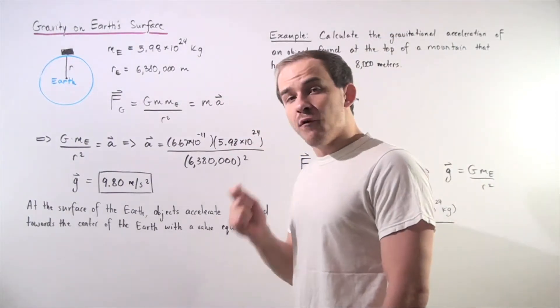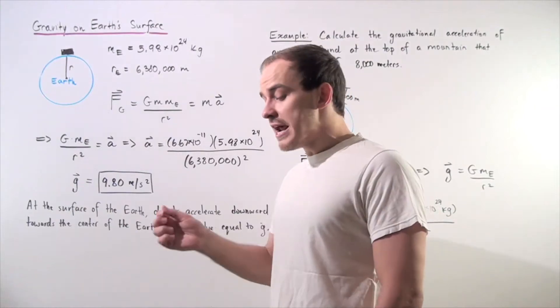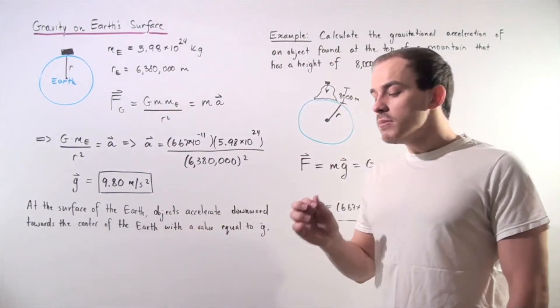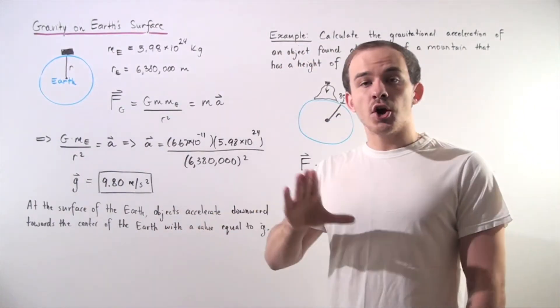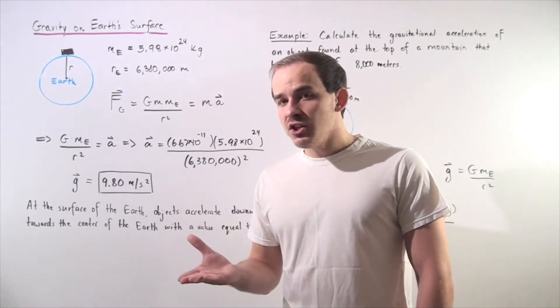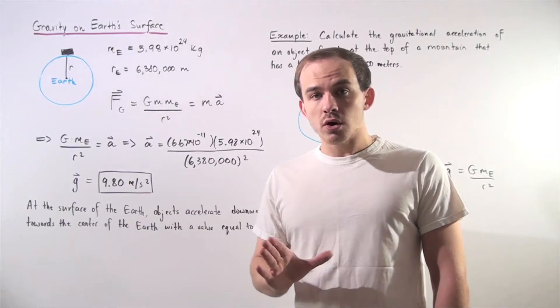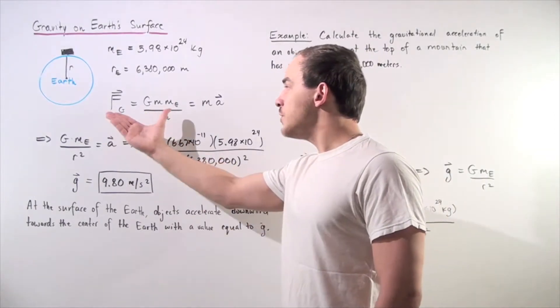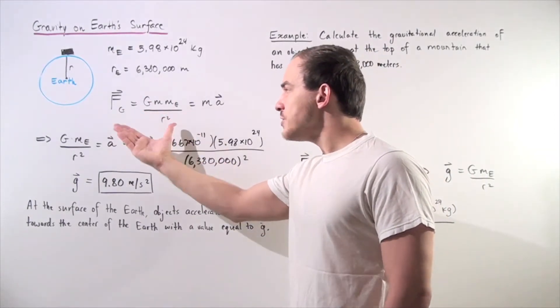Because a net force acts on my object. The net force comes from the gravitational pull of the Earth on our object. Now, we can find the value of the gravitational force using our Law of Universal Gravitation equation, shown here.